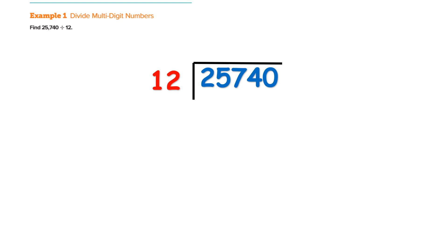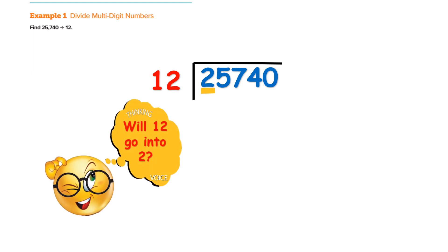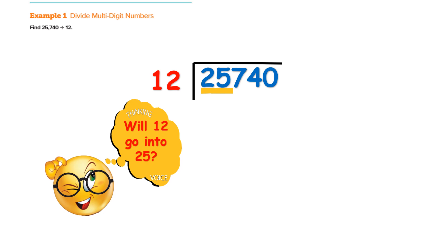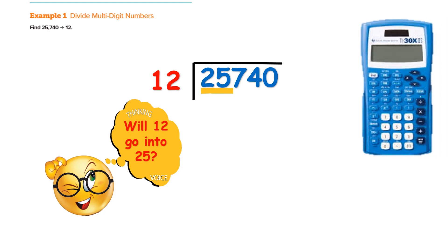When I have 25,740 divided by 12, I put my first number inside the box — it's what I have — and I'm putting it in equal groups. My divisor is 12. I start asking: will 12 go into 2? No, it won't. So I go to my next number. Now I have 25. Will 12 go into 25? Yes, it sure will. If you don't know how many times, type the number inside the box divided by the number on the outside into your calculator — so 25 divided by 12.